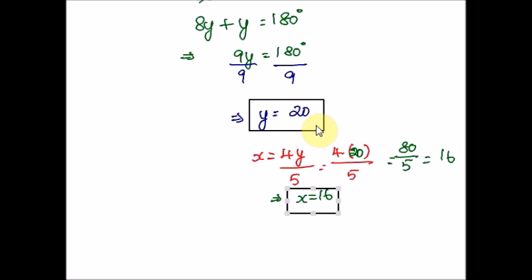We used just two concepts: corresponding angles are equal, and linear angles are supplementary. For corresponding angles, you equate the two angles. For linear angles, you add them and set the total equal to 180 degrees. Hope you are clear with this example.